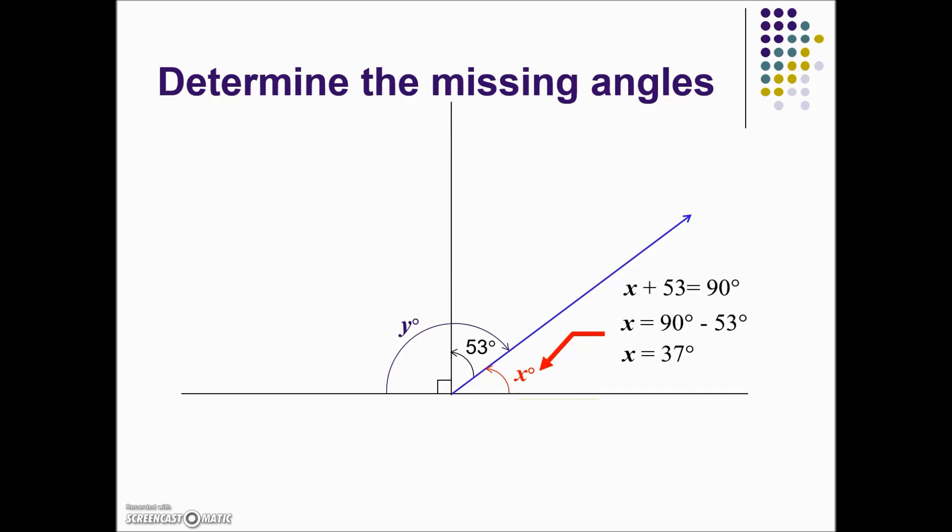Once we know the measure of angle x, if you look at angle x and angle y, this obtuse angle, those two combine to give us supplementary angles. x plus y equals 180. Replacing x with the value that we found, its measurement 37 degrees, subtract 37 from each side. This leaves us with a result of 180 minus 37, or angle y having a measure of 143 degrees.